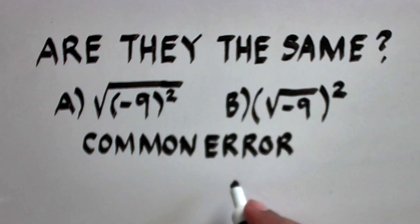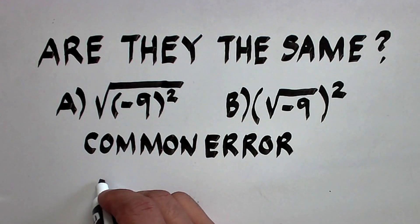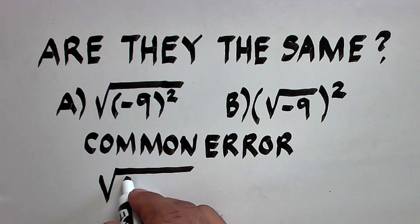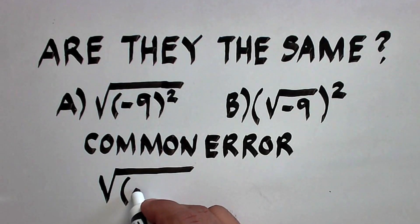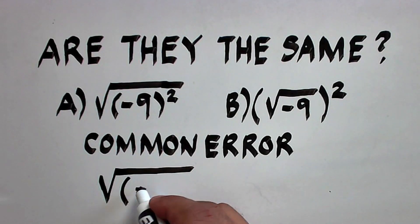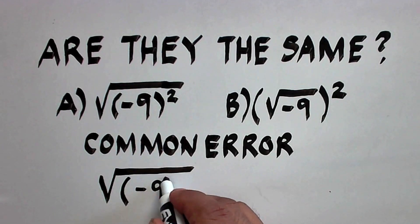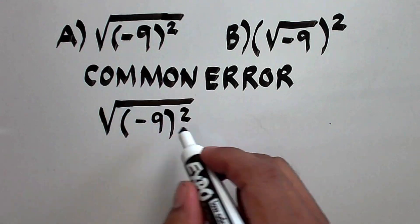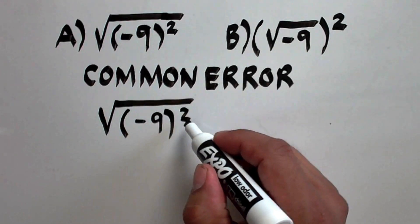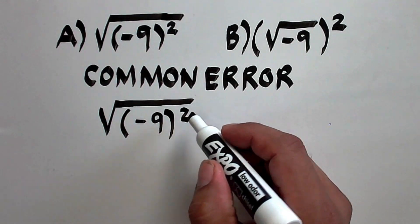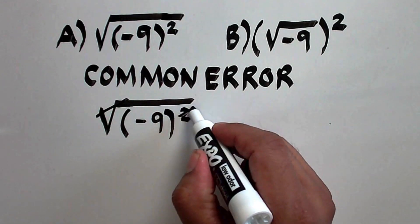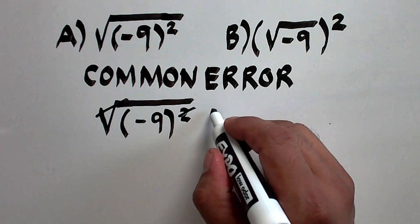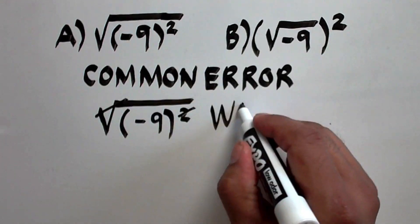Let's talk first about the common error. Many are tempted to perform it like this. When you have the square root of the quantity of negative 9 squared, you see that there is a square root and there is an exponent, and so you just cancel them out. Again, this is wrong.